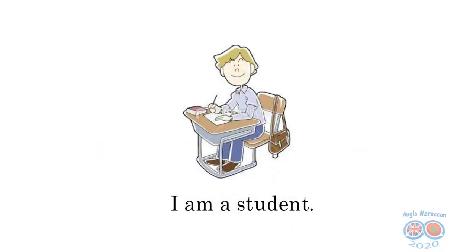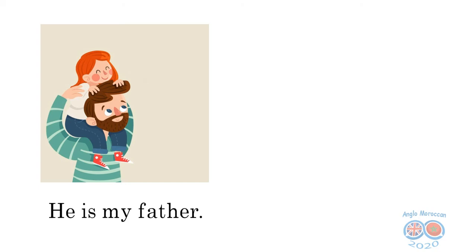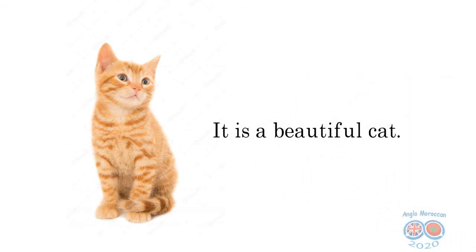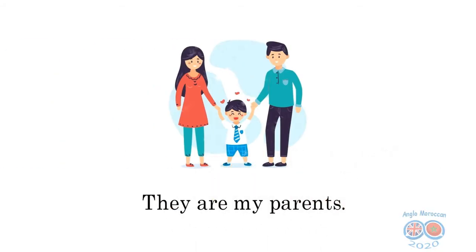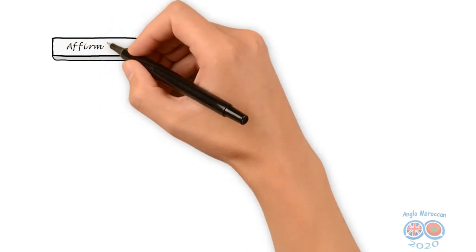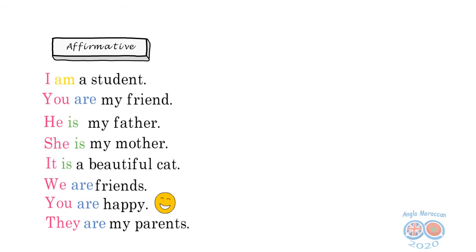Let's have some examples now. I am a student. You are my friend. He is my father. She is my mother. It is a beautiful cat. We are friends. You are happy. They are my parents. The sentences we have seen are all affirmative — this is the affirmative form.